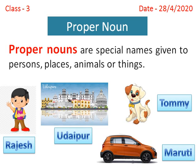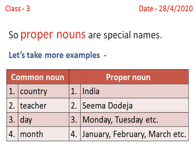The last picture is of a car. Car is a common noun because it is a general name. But Maruti is a proper noun because it is a special name. So, proper nouns are special names.